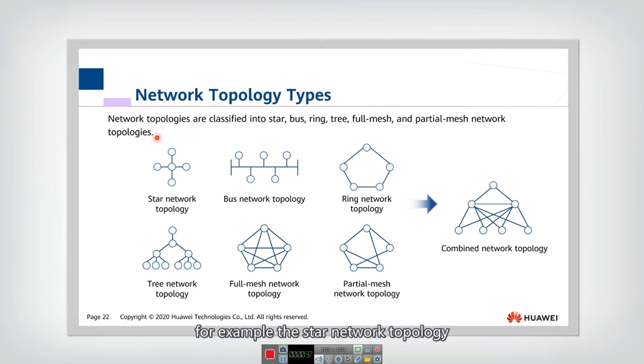Typical network topologies include, for example, the star network topology. There is a central node and all the other nodes directly connected to the central node. That is the star network topology.